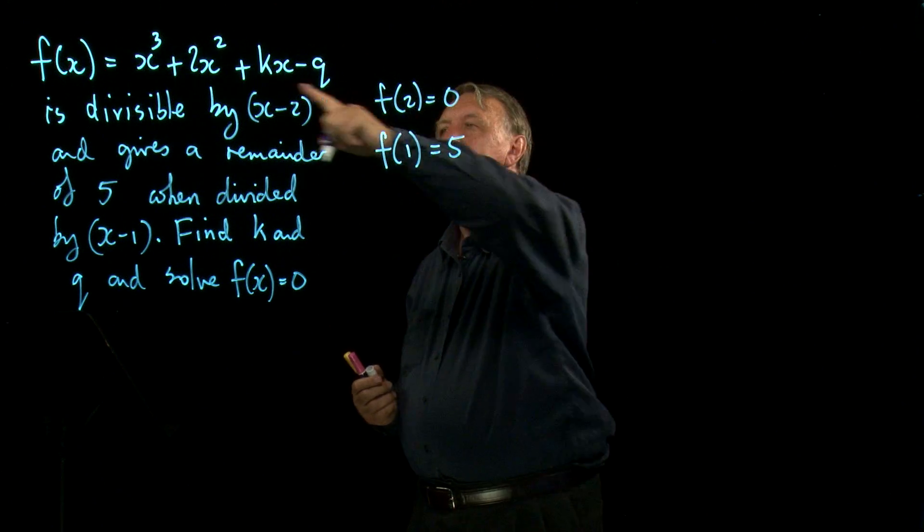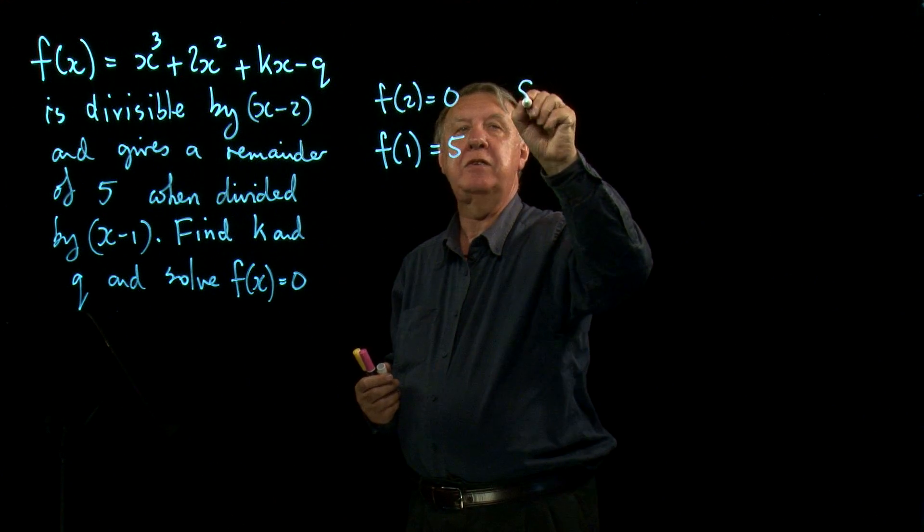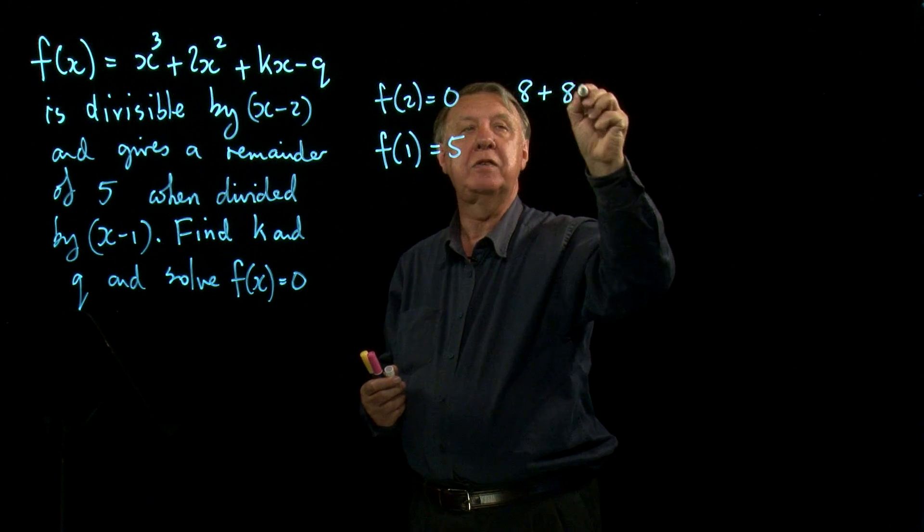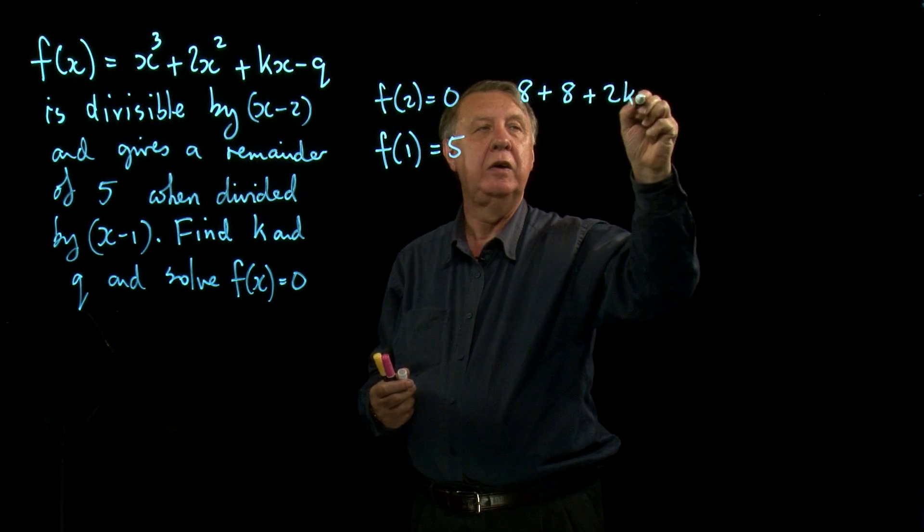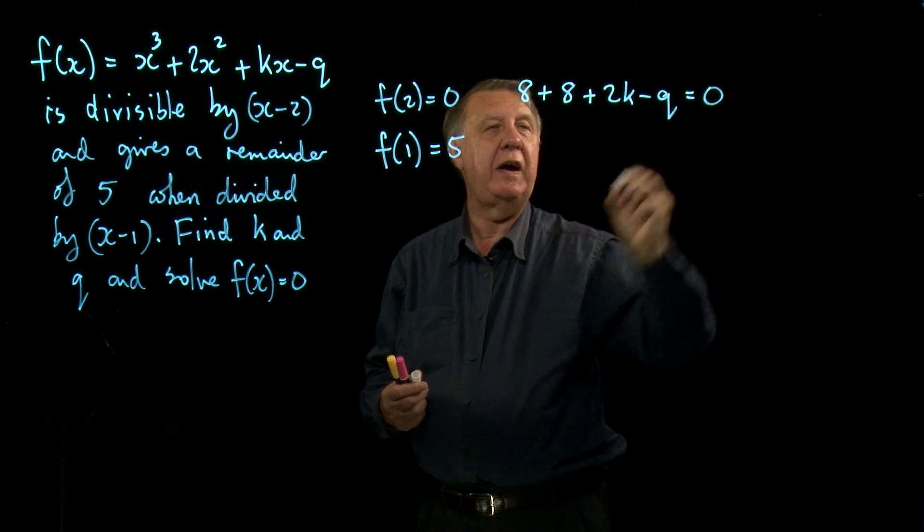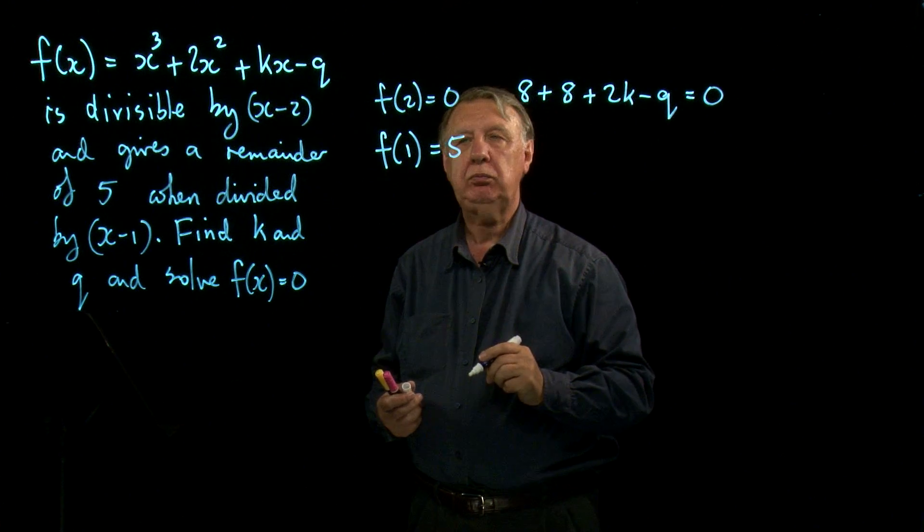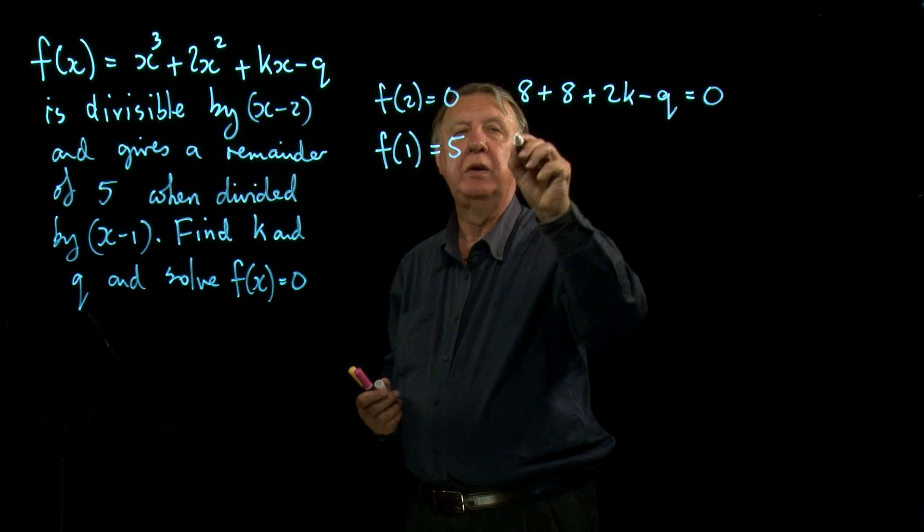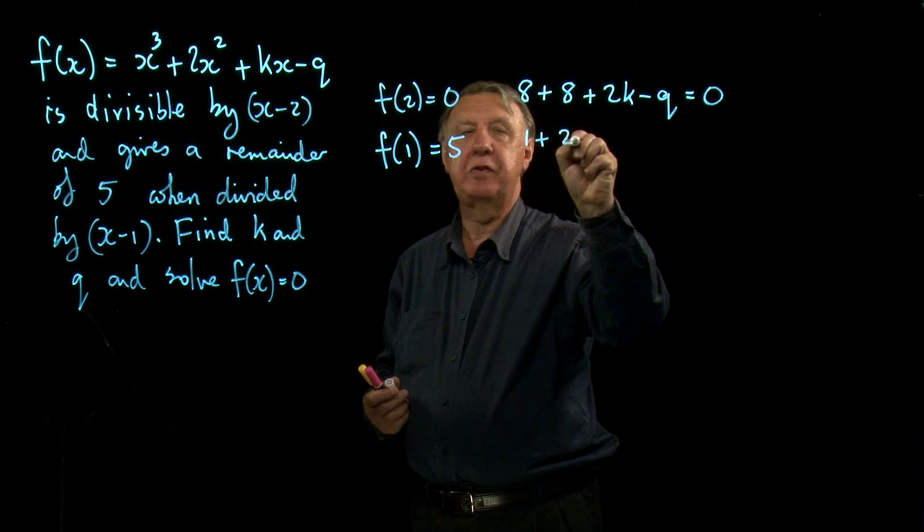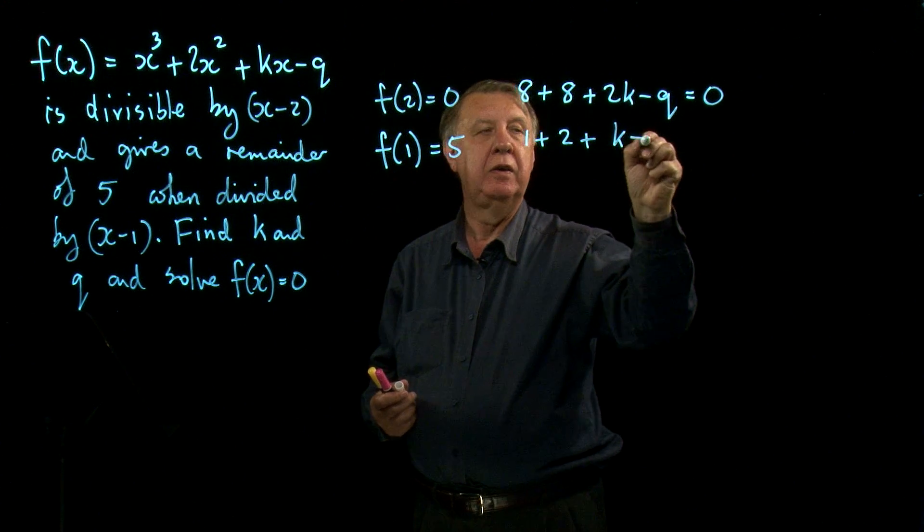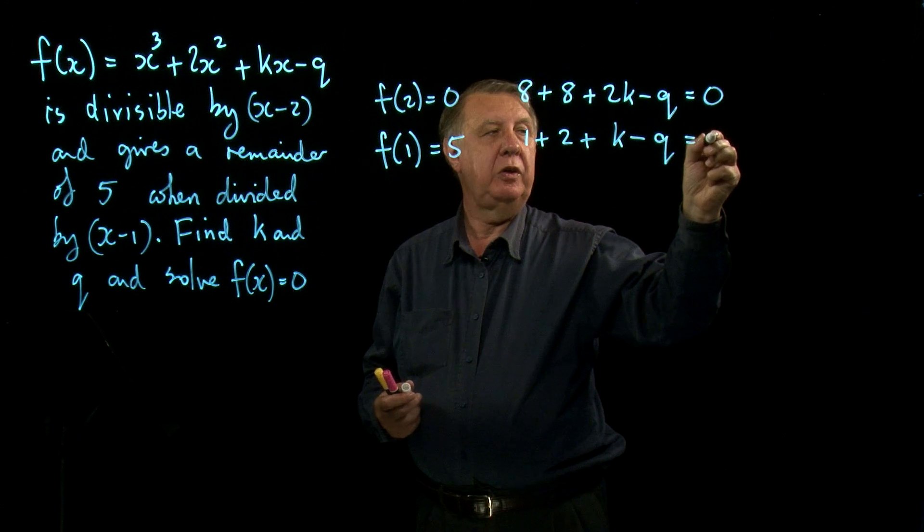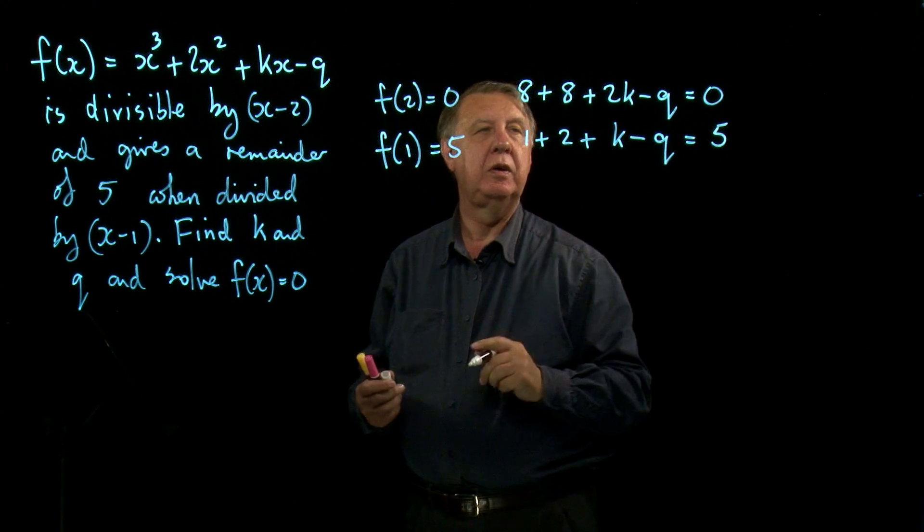So what is function two? Well it's eight plus eight plus two k minus q and that has to be zero. What is function one? It's one plus two plus k minus q and that has to be five.